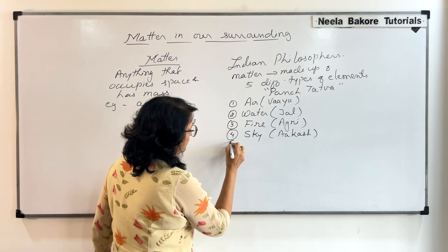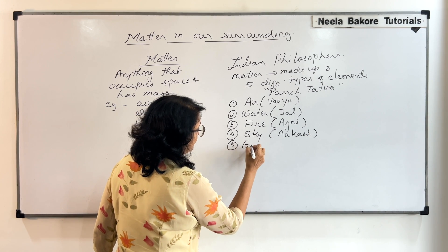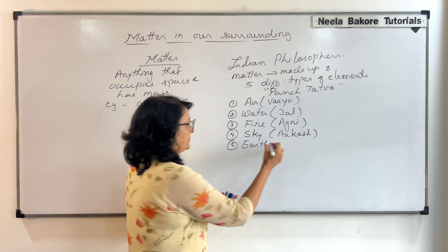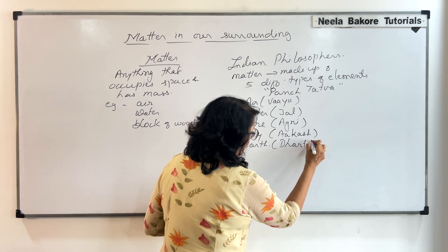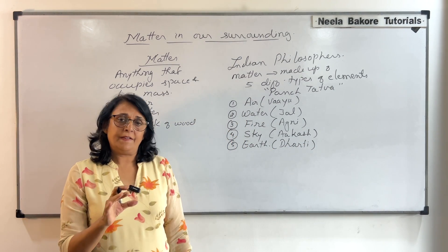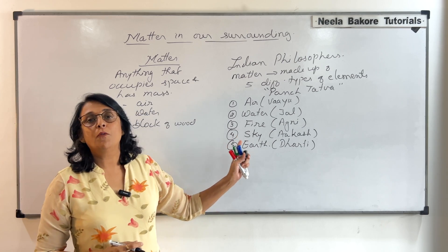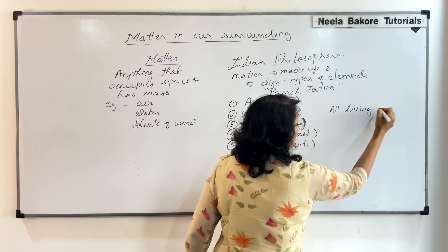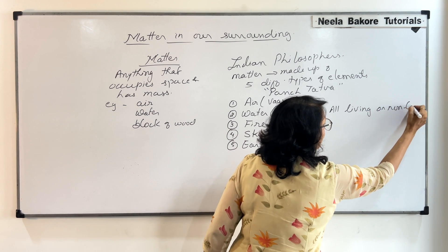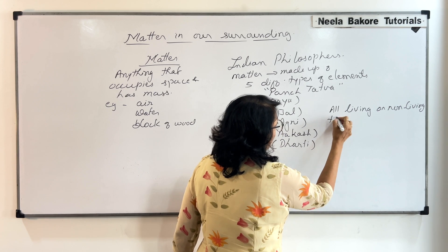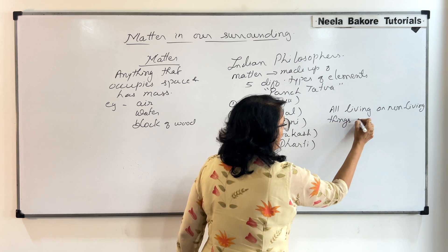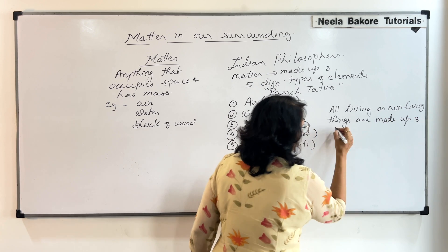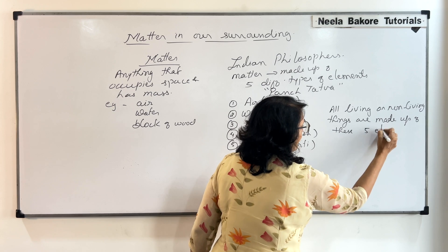The fifth element is earth, written as 'dharti.' They say that everything — every matter, all living or non-living things — is made up of all these five elements.